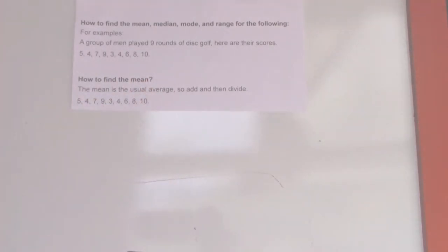So how to find the mean? The mean is the usual average, so add and then divide. You will add 5 plus 4 plus 7 plus 9 plus 3 plus 4 plus 6 plus 8 plus 10 equals 56.